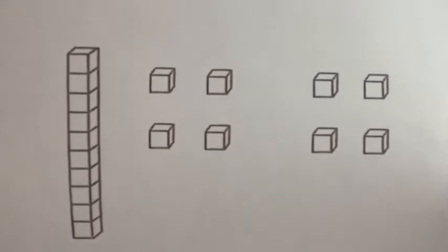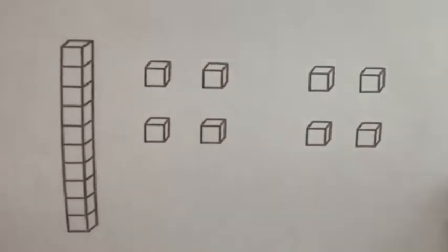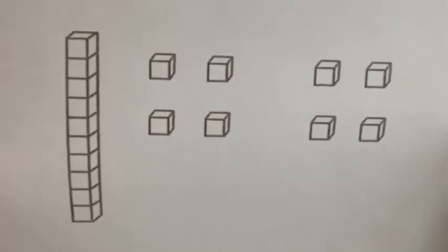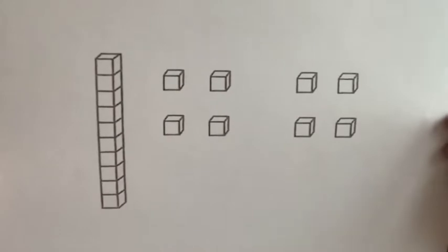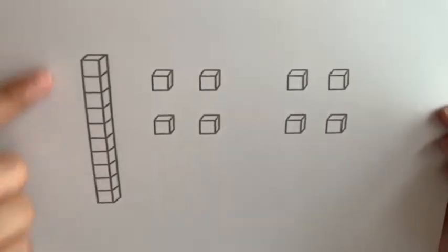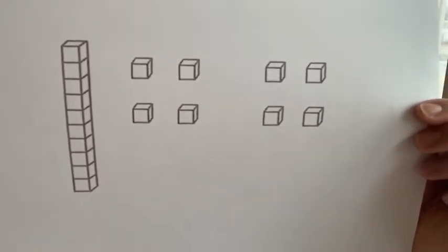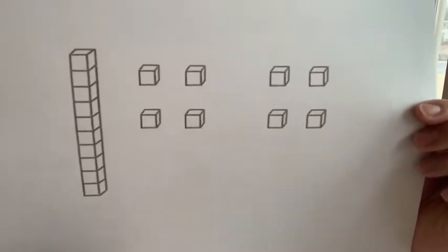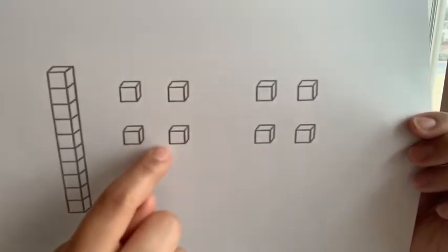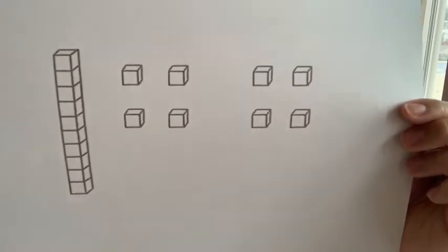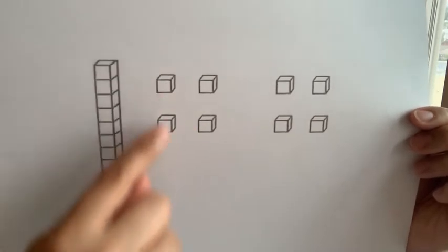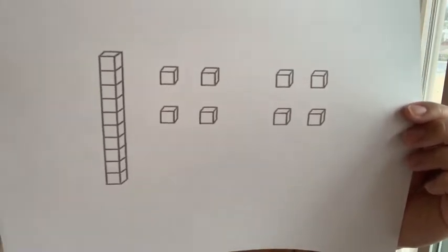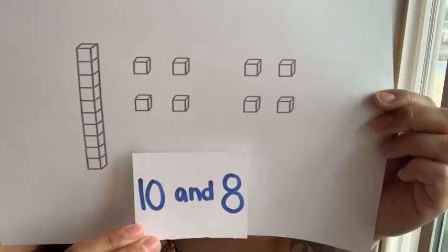Our next model is again our 10-stick and some more ones. What number in the say 10 way matches this quantity? Here's our 10-stick, so here's our group of 10. Here are our ones. I can count by ones, or I can see them in other groups — here's a group of 4 and here's a group of 4. I know that 4 and 4 is the same as 8, so I have 8 more ones and 1 group of 10. The say 10 way would be 10 and 8.